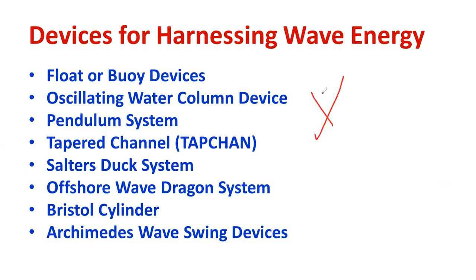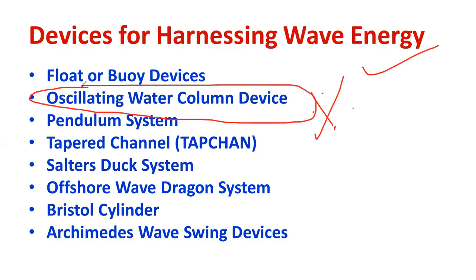It may be asked in the examination: explain the various types of devices which will be used for harnessing energy from the wave — very important. It can be asked in the examination individually, like what do you mean by oscillating water column device. Otherwise they may ask: what are the different devices helpful for extracting energy from the sea wave? Prepare the checklist: the prod, pendulum, oscillating, salt dust, crystal moisture, crystal cylinder, etc.